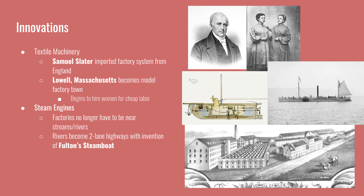Textile machinery was brought over from England by Samuel Slater, who carried all the trade secrets from Britain's textile industry at a time when England was trying to keep factory and machine designs secret to maintain their comparative advantage. Lowell, Massachusetts became the model for a factory town in the United States, with mills and factories springing up alongside naturally occurring streams that provided hydroelectric power.